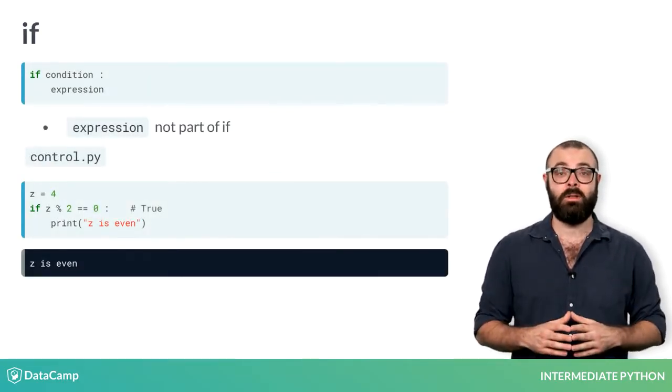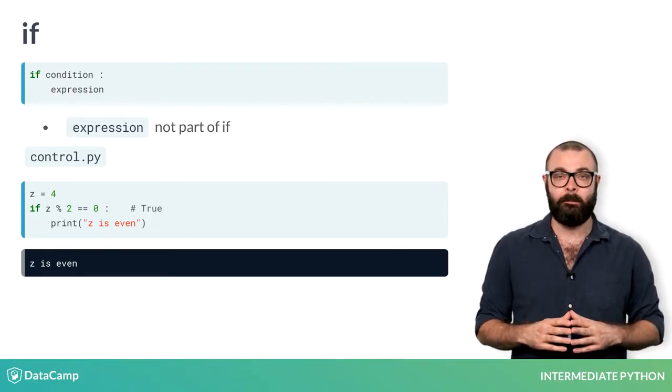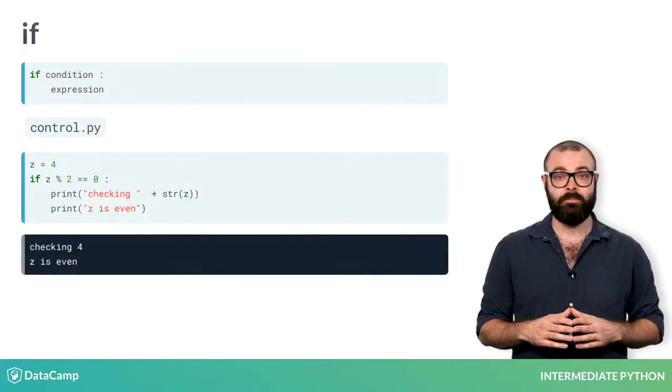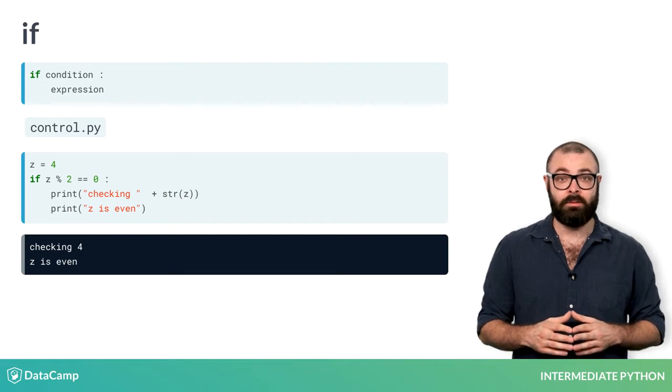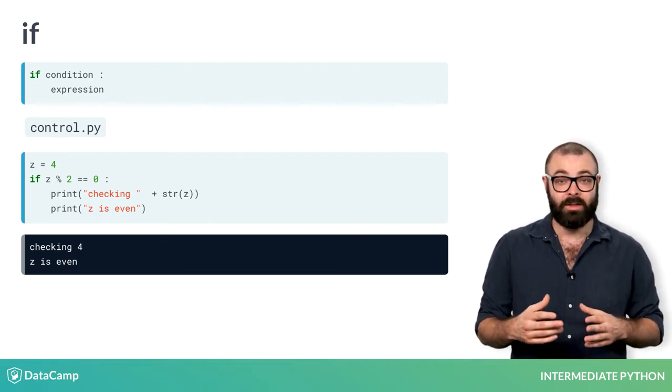To exit the if statement, simply continue with some Python code without indentation and Python will know that it's not part of the if statement. It's perfectly possible to have more lines inside the if statement, like this for example. The script now prints out two lines if you run it.